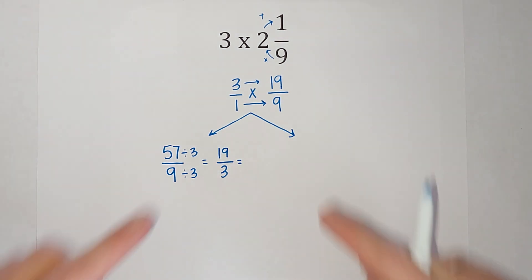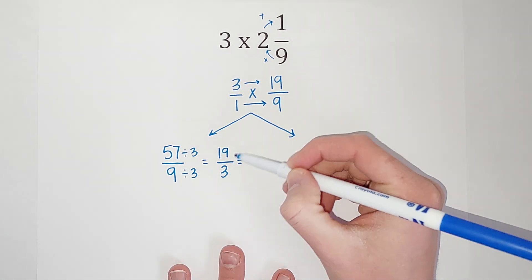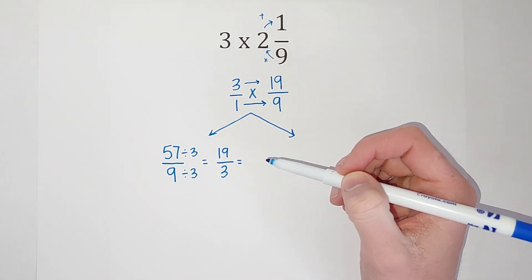And then oftentimes, we do want it back as a mixed number. It's just easier for us to understand it as a mixed number. So to do that, I ask myself, how many times does 3 go into 19?